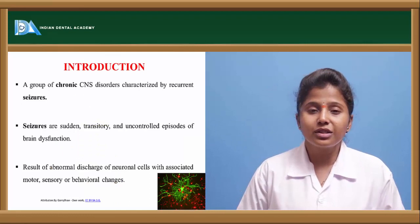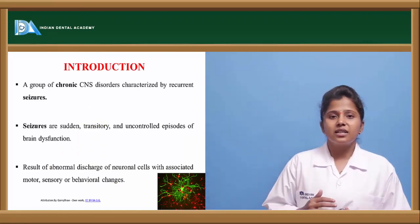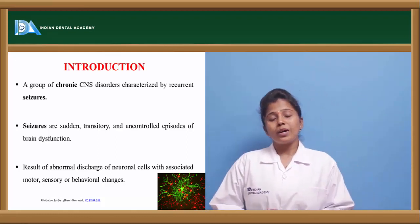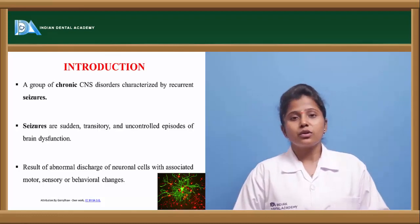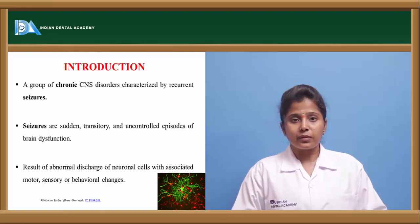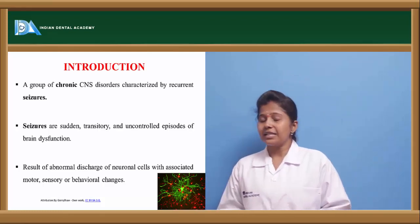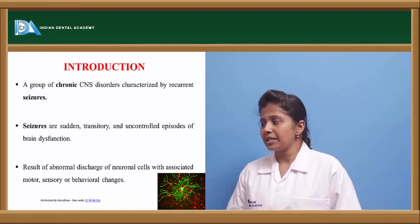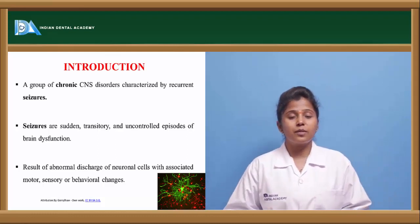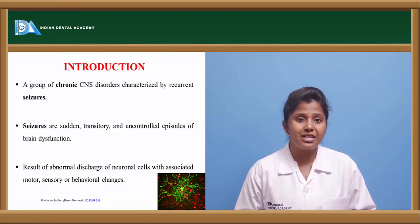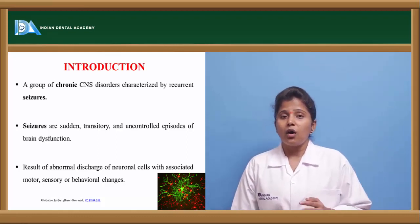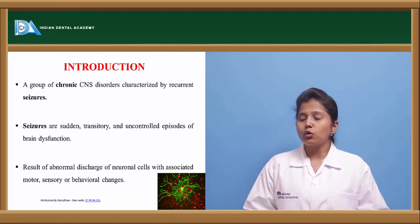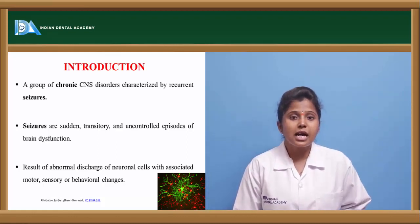Seizures are sudden or transitory uncontrolled episodes of brain dysfunction. This dysfunction occurs because neurons — the basic unit of the brain — discharge abnormally. If there is abnormal discharge of neuronal cells along with motor, behavioral, and sensory changes, it leads to repetitive episodes of brain dysfunction. A group of chronic CNS disorders associated with seizures is called epilepsy.